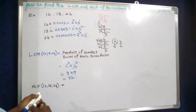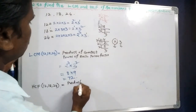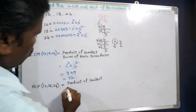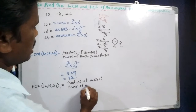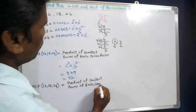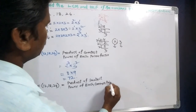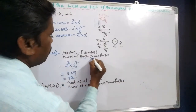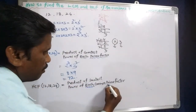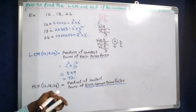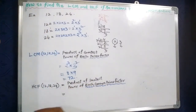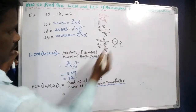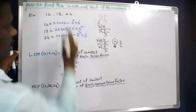HCF is the product of the smallest power of each common prime factor. The common prime factors here are 2 and 3. The smallest power of 2 is 2 to the power of 1.